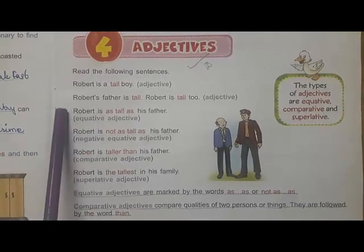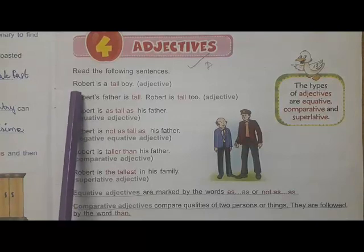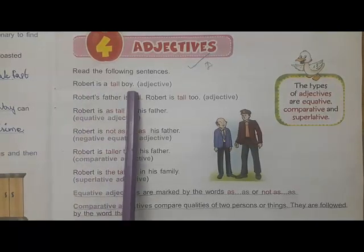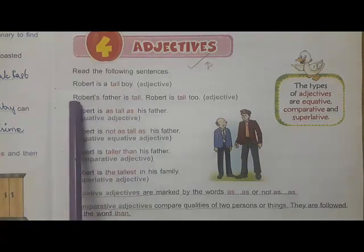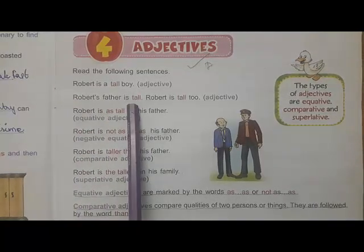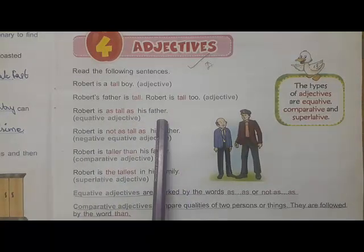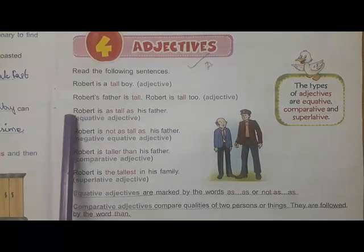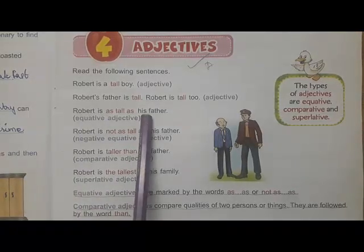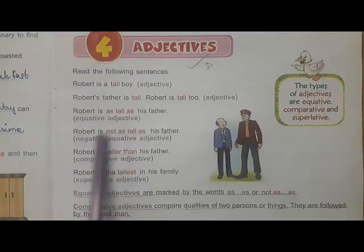We have to study the text from the top. Here some examples are given: 'Robert is a tall boy.' All these words shown in red are adjectives. 'Robert's father is tall.' 'Robert is tall too.' 'Robert is as tall as his father.' This is an equative adjective because here we are equating Robert with his father. This kind of adjective is called an equative adjective.